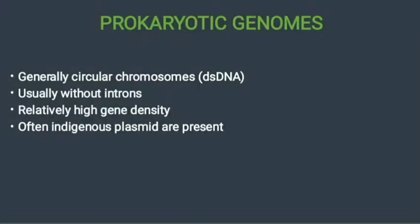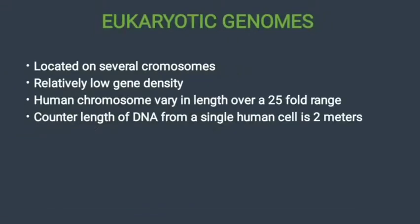Next we see prokaryotic genomes. Prokaryotic genomes are generally circular chromosomes consisting of double-stranded DNA, usually without introns, and with relatively high gene density. Indigenous plasmids are also present.